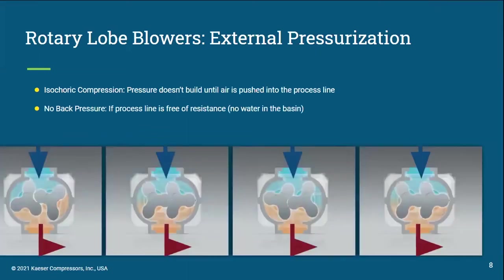Now let's talk about rotary lobe blowers. Rotary lobe blowers traditionally come in two or three lobe configurations — a three lobe configuration is shown here. Rotary lobe blowers use what is called isochoric compression, or more commonly known as external compression. This means the blower will push a fixed volume of air on each rotation of the rotors and will only build as much pressure as there is resistance. If there is no back pressure, for instance when there is no water in an aeration basin, there will be little to no pressure — this is why rotary lobe blowers are considered adaptive. One limiting factor is the gap between the rotor and the housing, which allows a certain amount of backflow known as slip. The larger the gaps, the higher the slip and the higher the operating temperatures, though improvements in manufacturing have reduced these gaps to maximize performance.